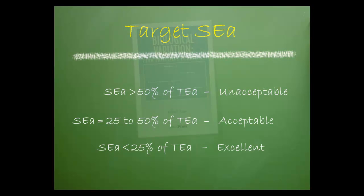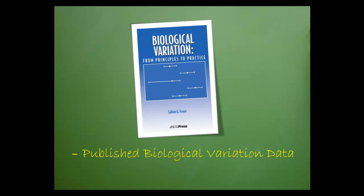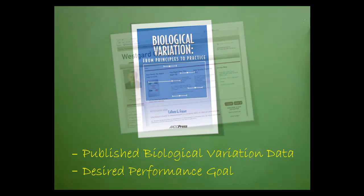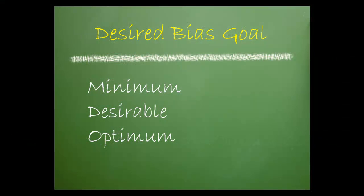Another option is to calculate the SEA as described in the book Biological Variation from Principles to Practice by Dr. Cullum-Frazier. This involves published biological variation data and a desired performance goal. Biological variation data includes both within-subject data and between-subject data. BV data may be found in many publications, including Dr. Westgard's site, maintained by Dr. Carmen Ricos. Once you have published BV data, the next step is to choose your lab's desired performance goal: minimum, desired, or optimum.